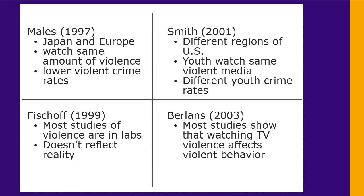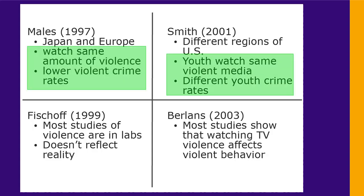Once your summaries are done, look at all the sources together and see what they have in common and how they're different. Clearly, there isn't agreement on this issue among researchers, but two of the sources have similar arguments — that people in different areas don't commit the same levels of violent crime even though they watch the same violence on TV. This is one example of a theme they have in common.